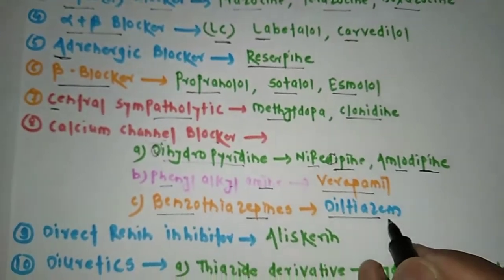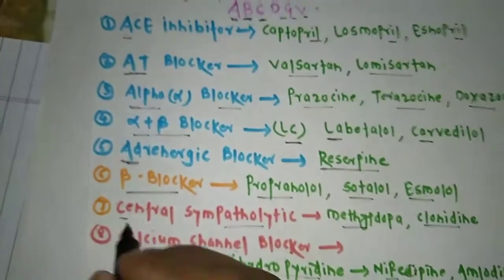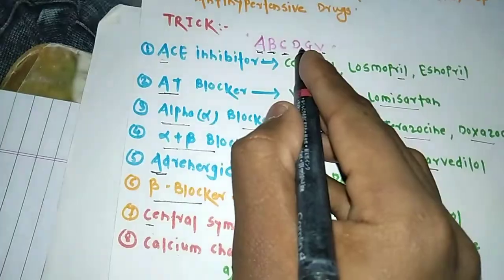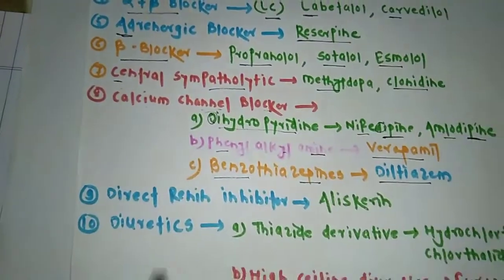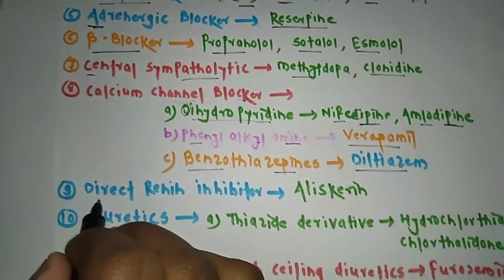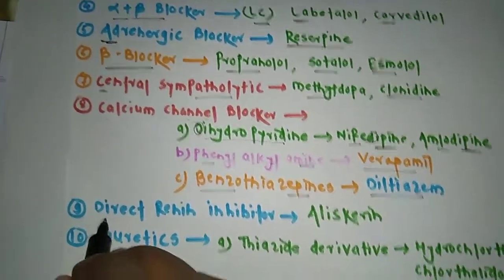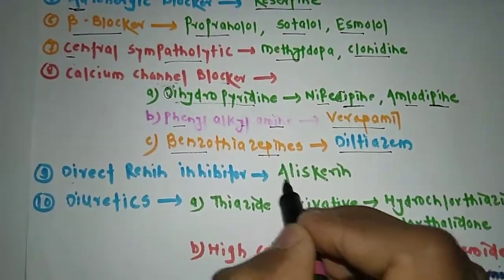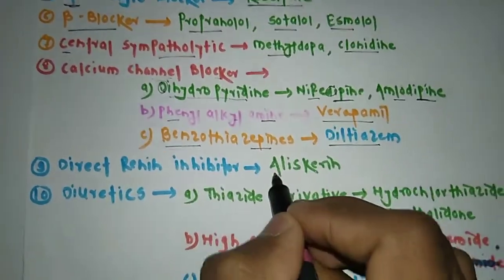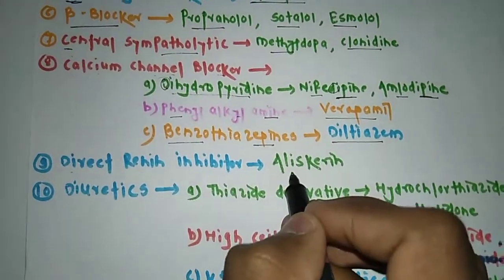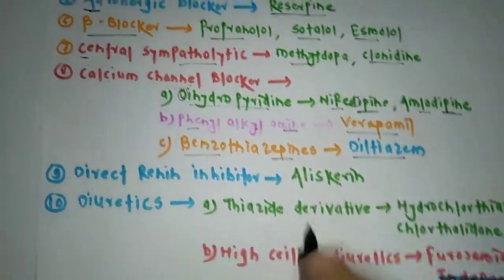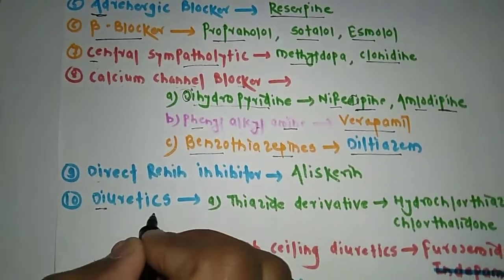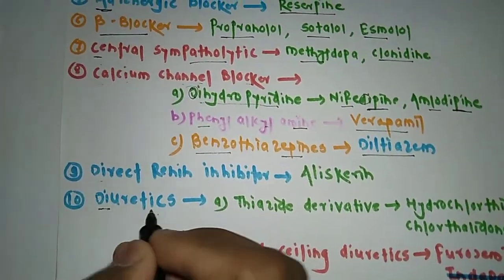We have completed C. Moving to D — the first D is Direct Renin Inhibitor. One very famous example is aliskiren. The second D is Diuretics, which has three subcategories.